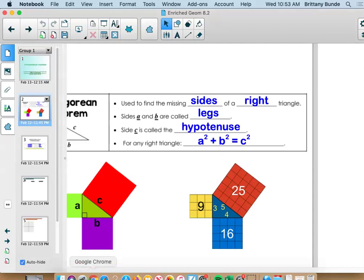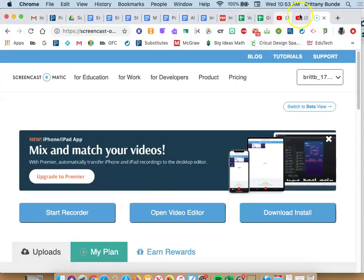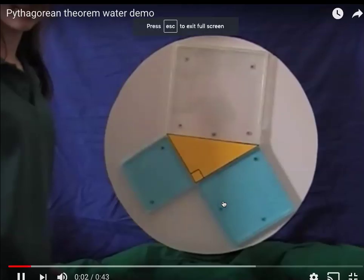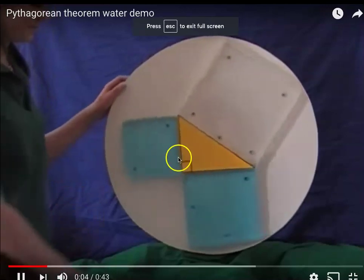So we love little demonstrations, right? So do you see how we have a right triangle?